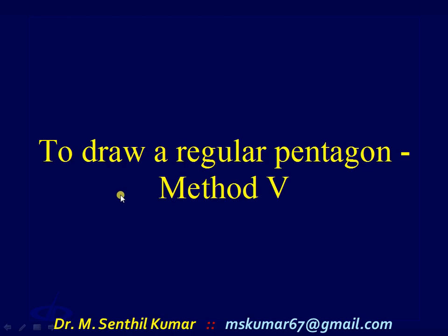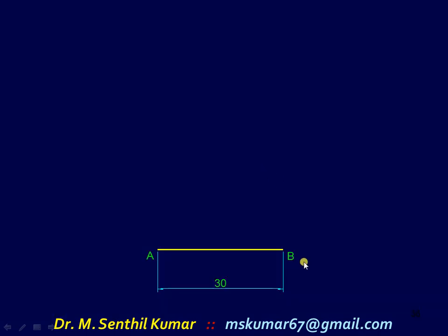We will see the seventh and final problem under geometrical constructions: how to draw a regular pentagon using another method. First step: draw one side of the pentagon, AB, whose length is equal to 30 mm.